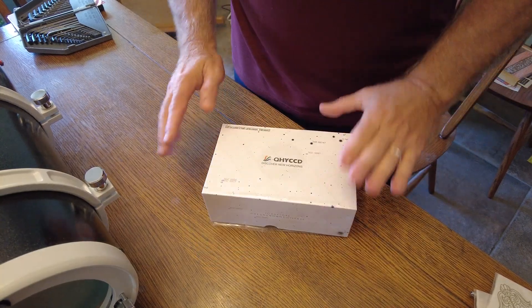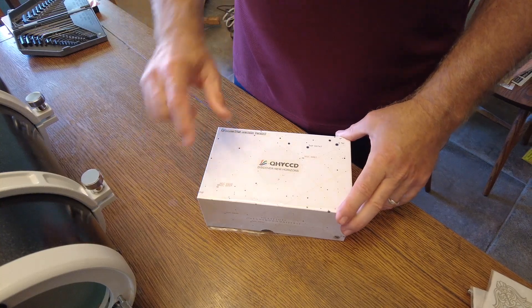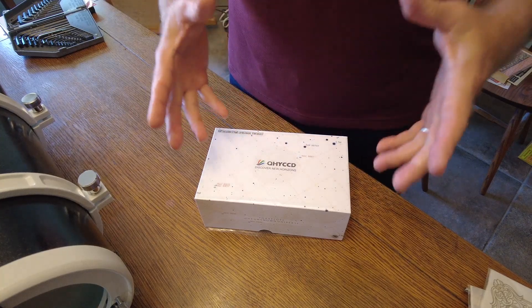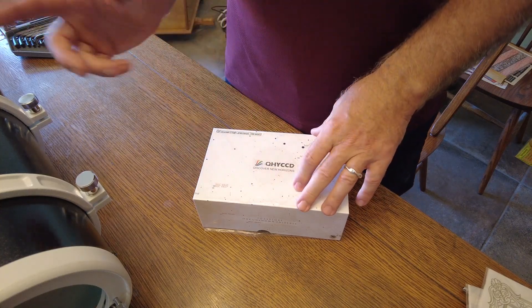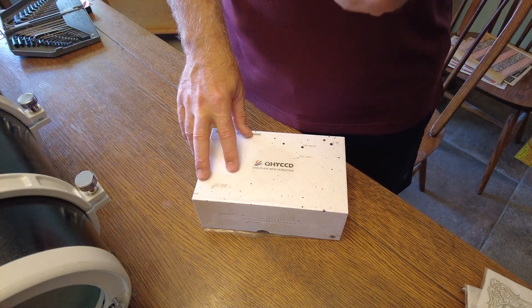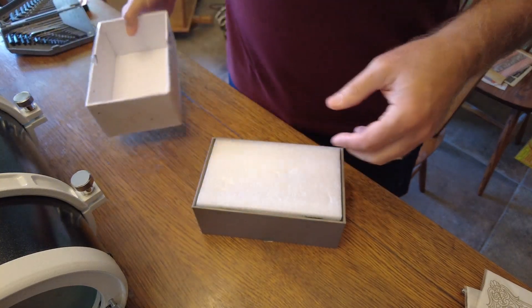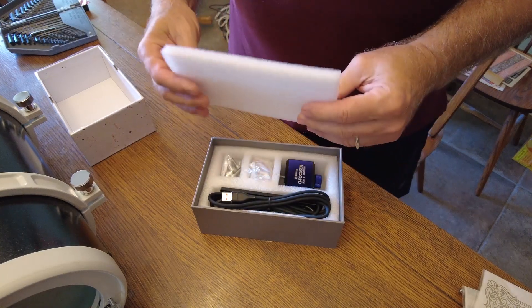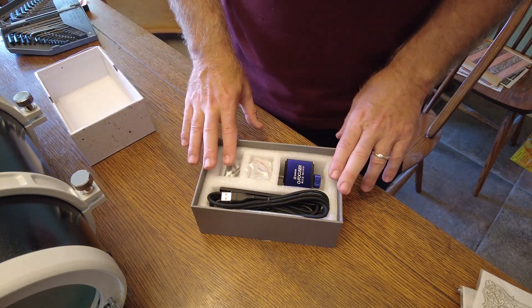Okay, so here's the QHY Q focuser high precision version. This version is actually going to go on the opposite side that you would expect from most focusers, which would be on the coarse side. This focuser will actually go on to the fine focuser side. So what's inside here? Amazingly, there's no instructions. I actually had to go online to QHY to figure out how to install this thing.